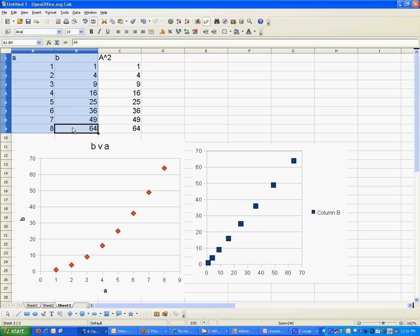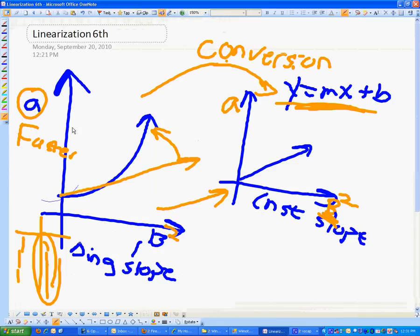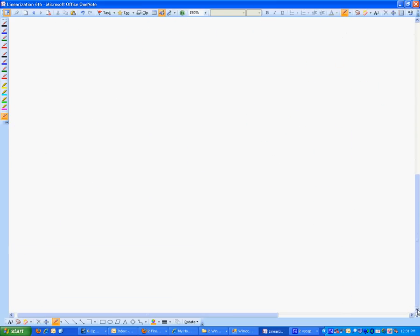That's the basic idea. There are three kinds of graphs we have to know how to linearize. You've seen one.